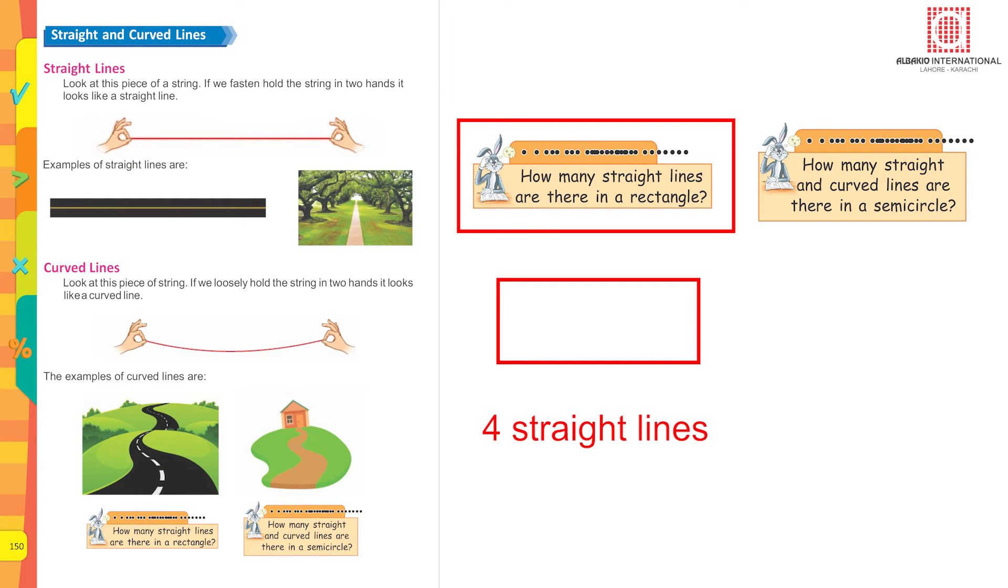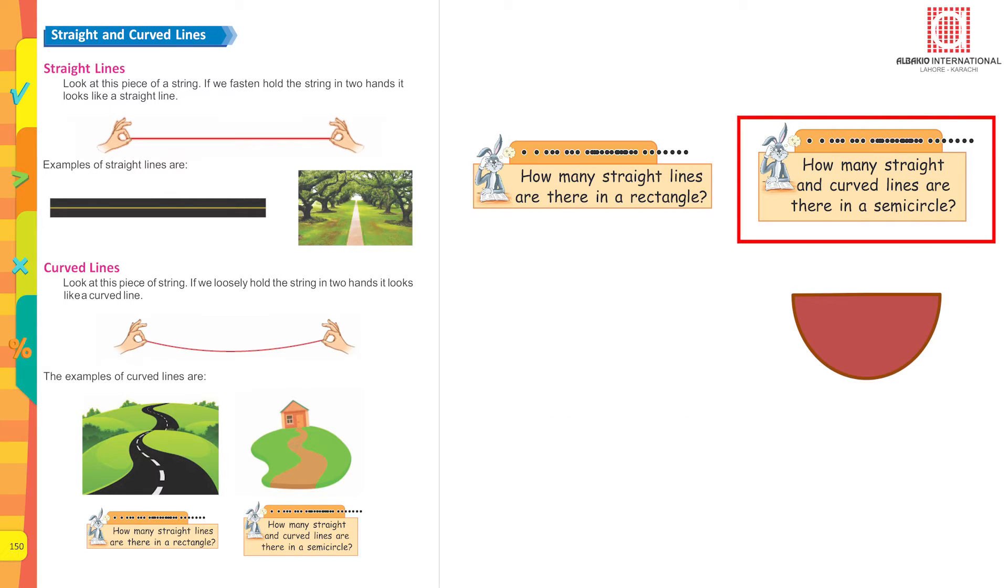Now you tell. Yes, four straight lines. How many straight and curved lines are there in a semicircle? Yes, one straight line and one curved line.